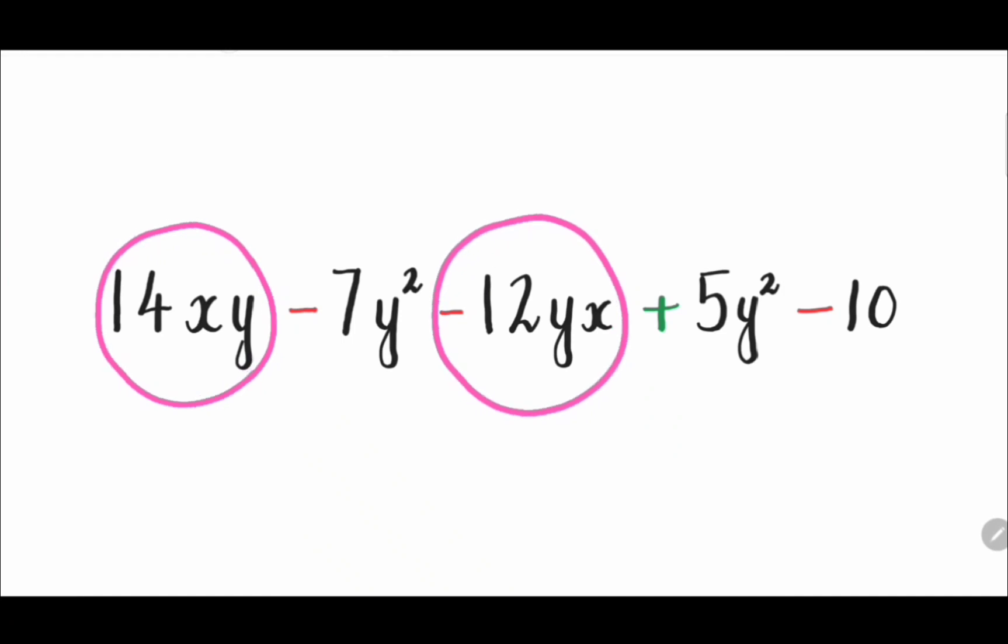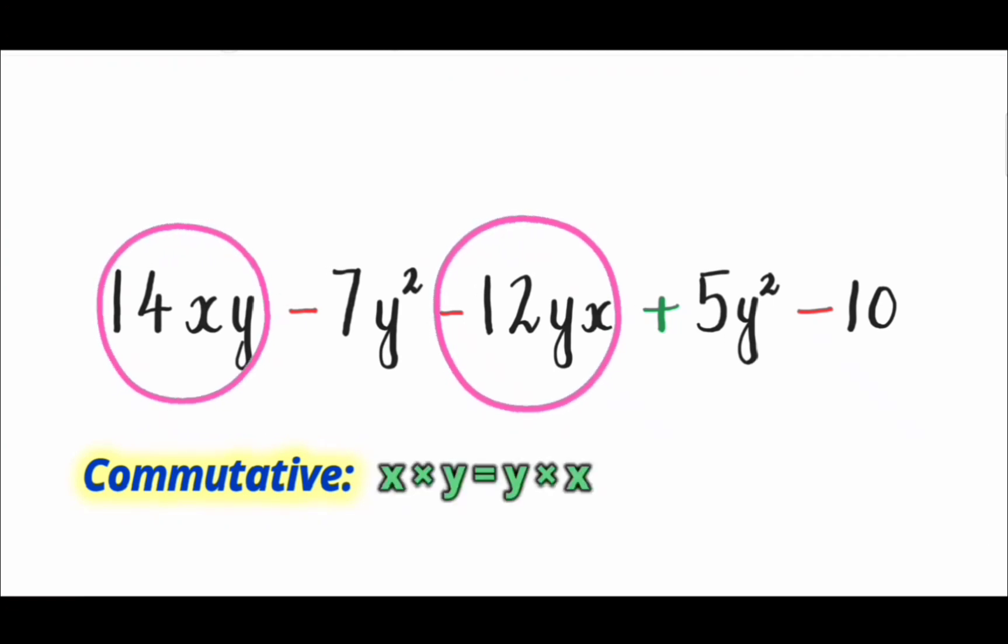Here, terms with the variables xy and yx are like terms because of the commutative property of multiplication: x × y = y × x.